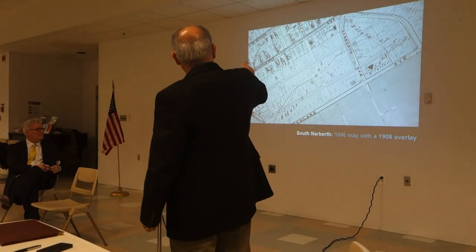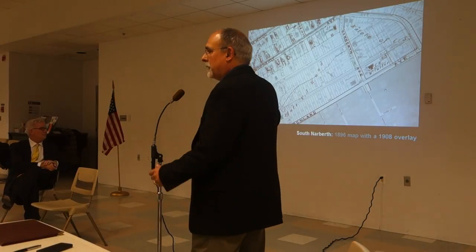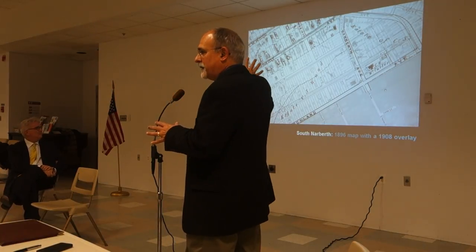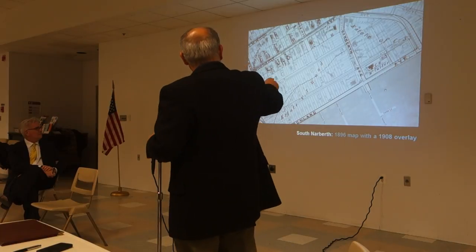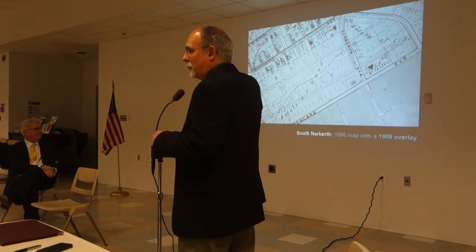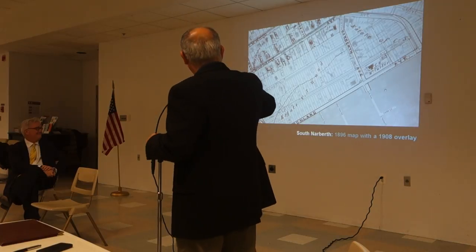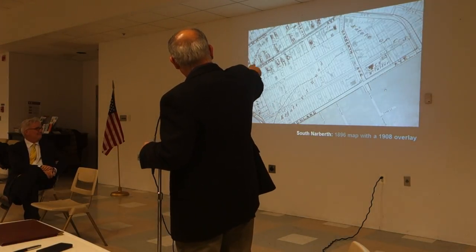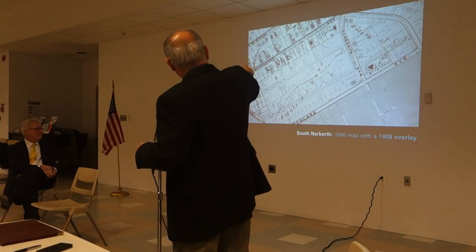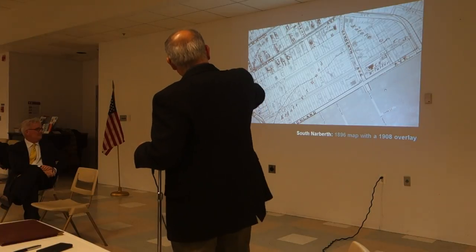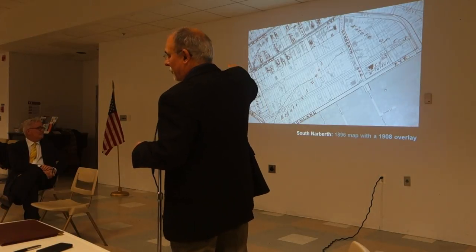So here, the darker section — that's the 1896 map — that's the way the south side looked in 1896. The lighter gray is the 1908 overlay. So by 1908, they had plowed all that out and begun to build houses. You can see a number of houses spotted throughout Chestnut and then Marion Avenue. You also see a stream running through it.